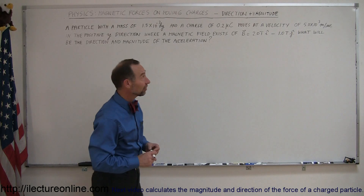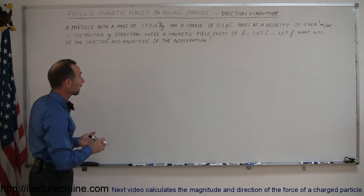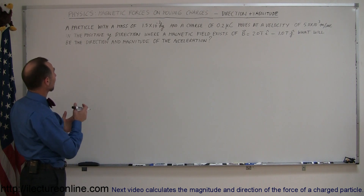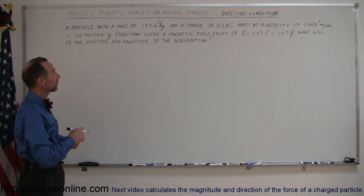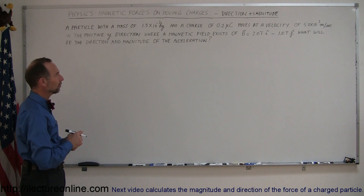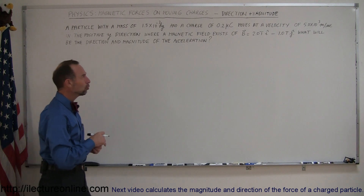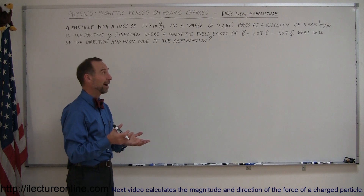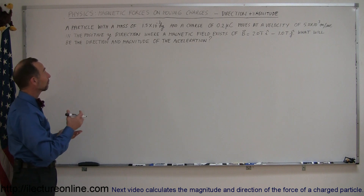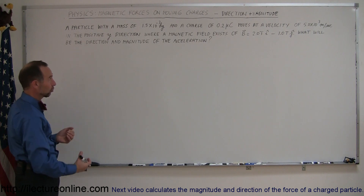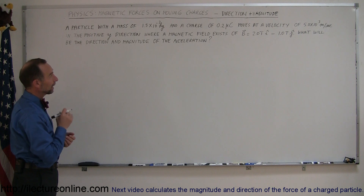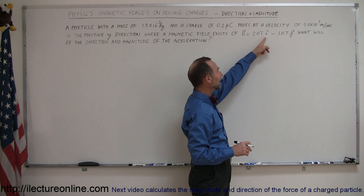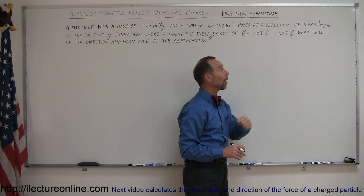Welcome to iLectures Online. Here's a good example of how to work with magnetic fields and moving charges within those magnetic fields. We have a particle with a mass of 1.5 times 10 to the minus 3 kilograms, that's about 1.5 grams, and a charge of 0.2 microcoulombs, and it moves at a velocity of 5 times 10 to the third meters per second, so 5 kilometers per second, through that magnetic field in the positive y direction, so straight up. A magnetic field exists there, and the B field has the magnitude of two Teslas in the x direction and one Tesla in the negative y direction.